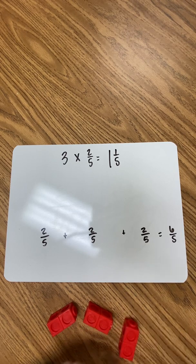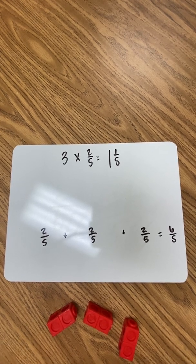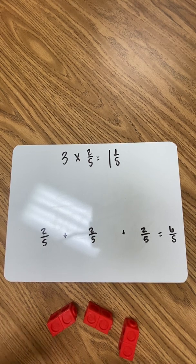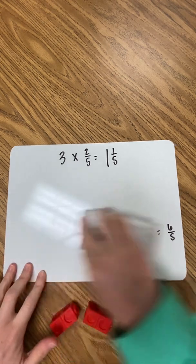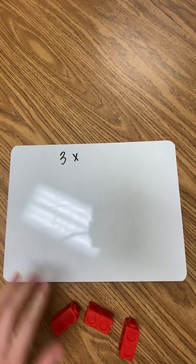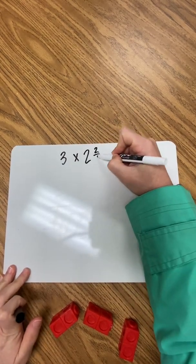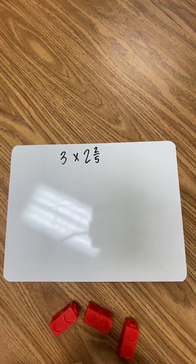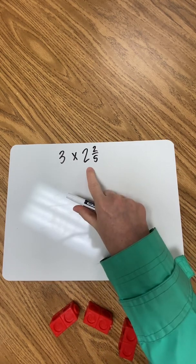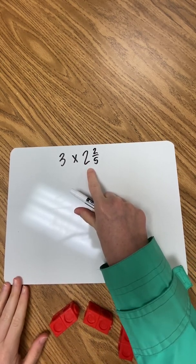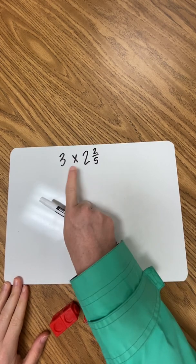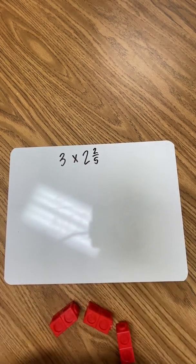Another reason to help students understand this conceptually is that when they face problems they haven't seen before, they're able to problem-solve better using what they know. For example, if students are given three times two and two-fifths, they can't just multiply the whole number by the numerator because now they have a mixed number. They could convert it to an improper fraction and multiply, since they know how to do that.